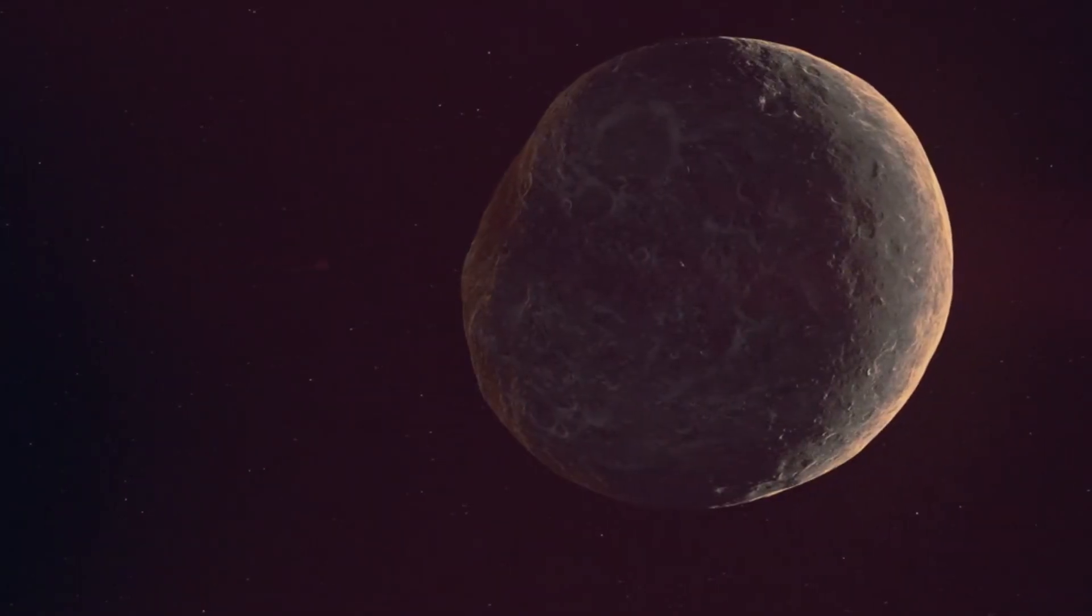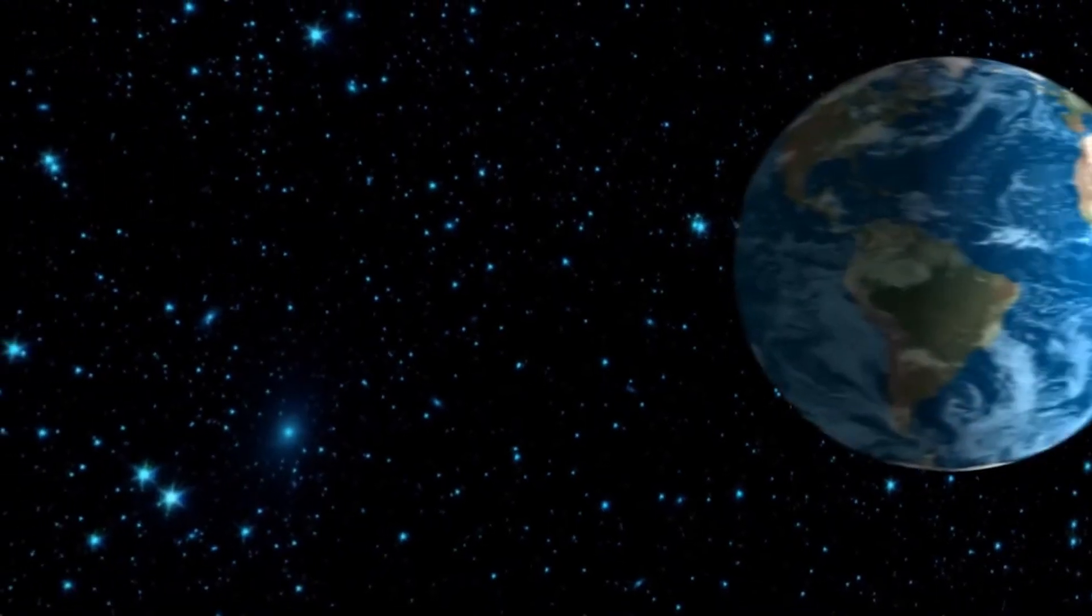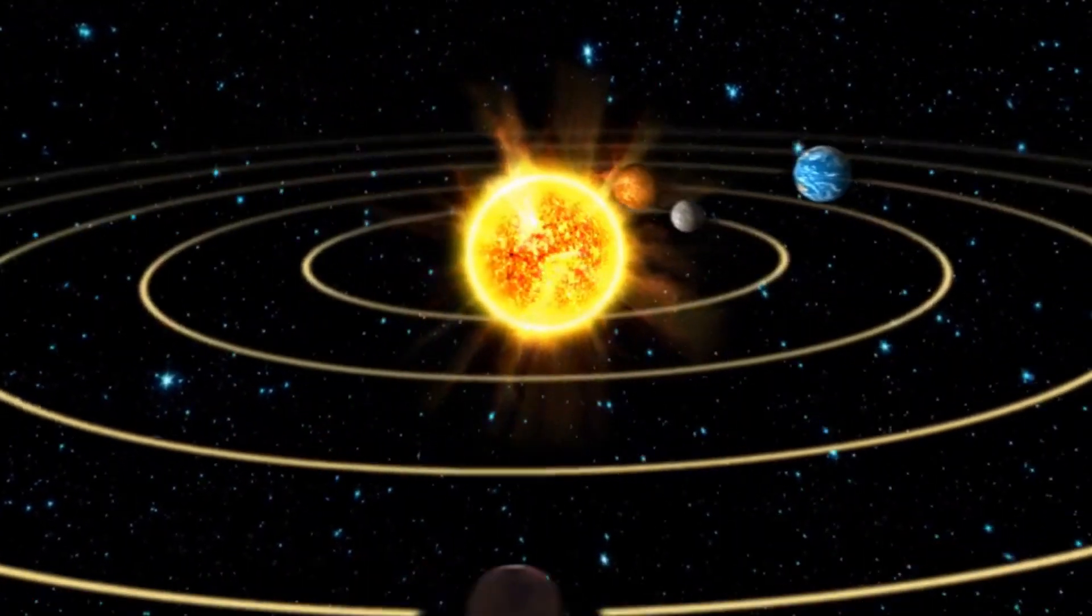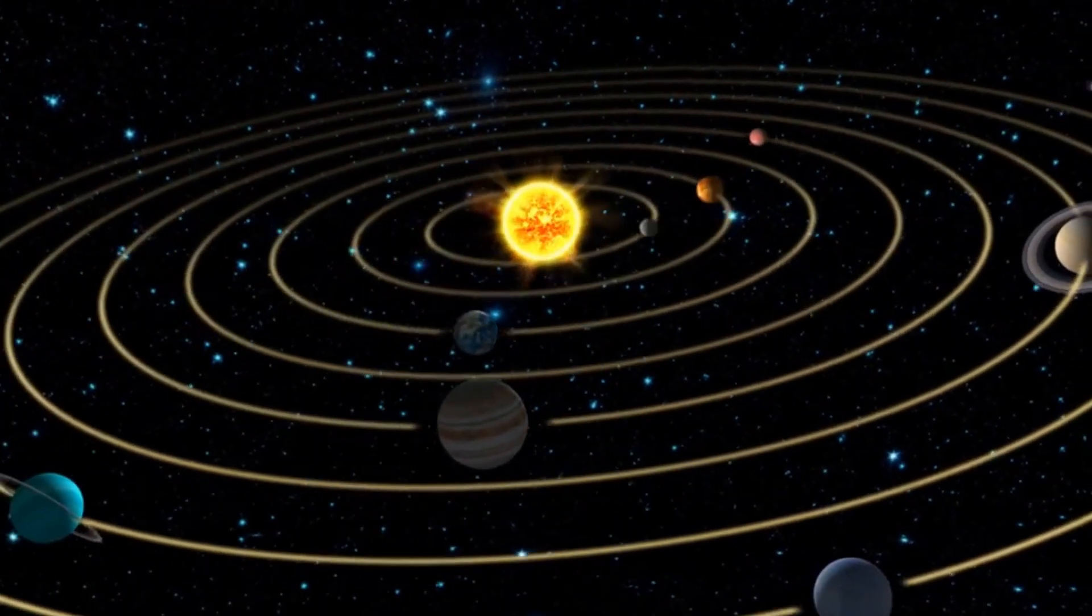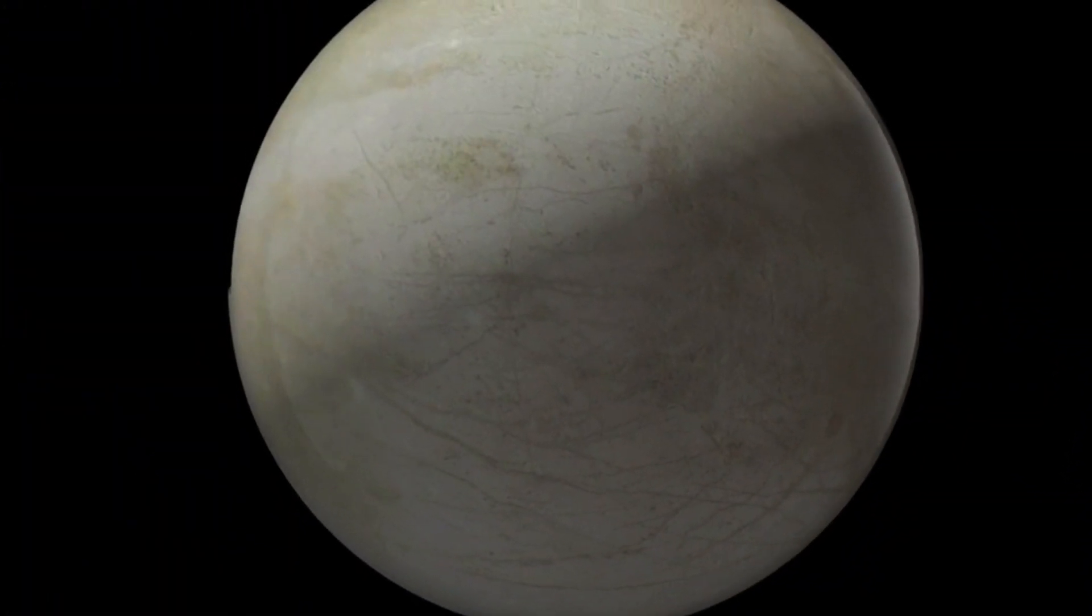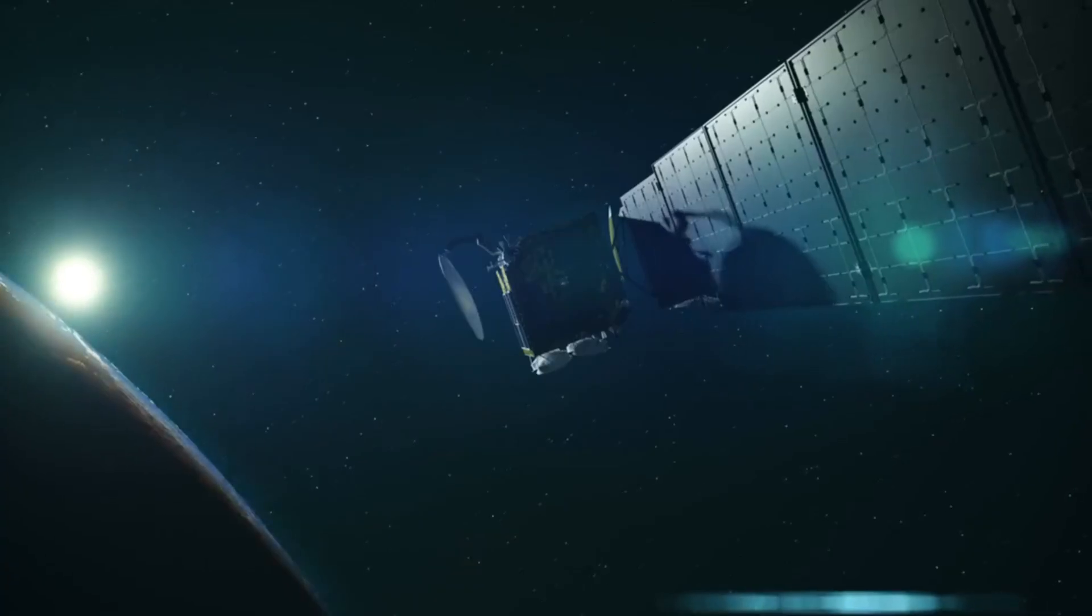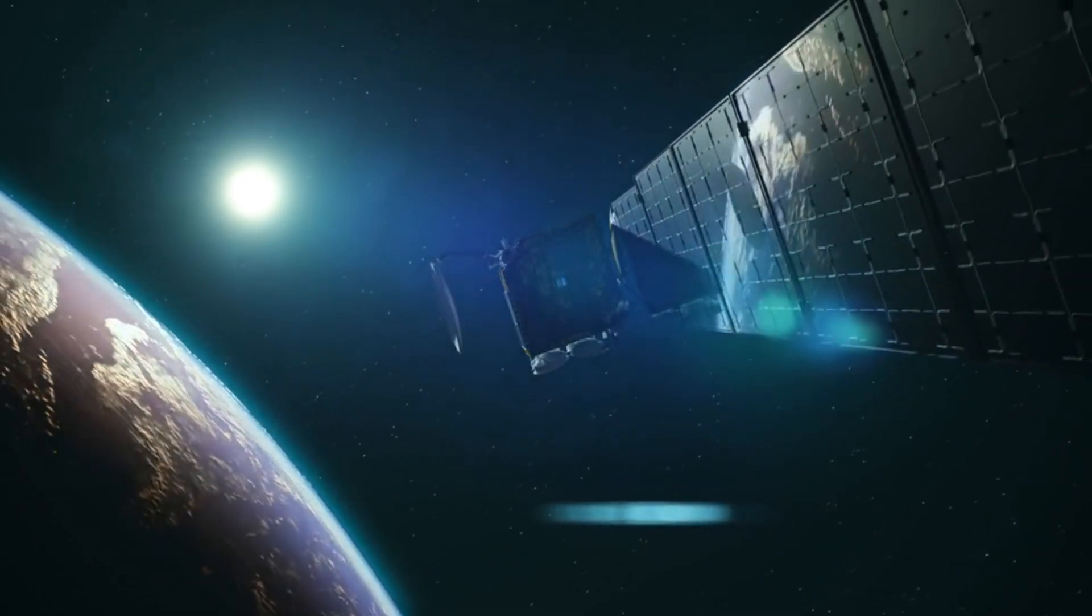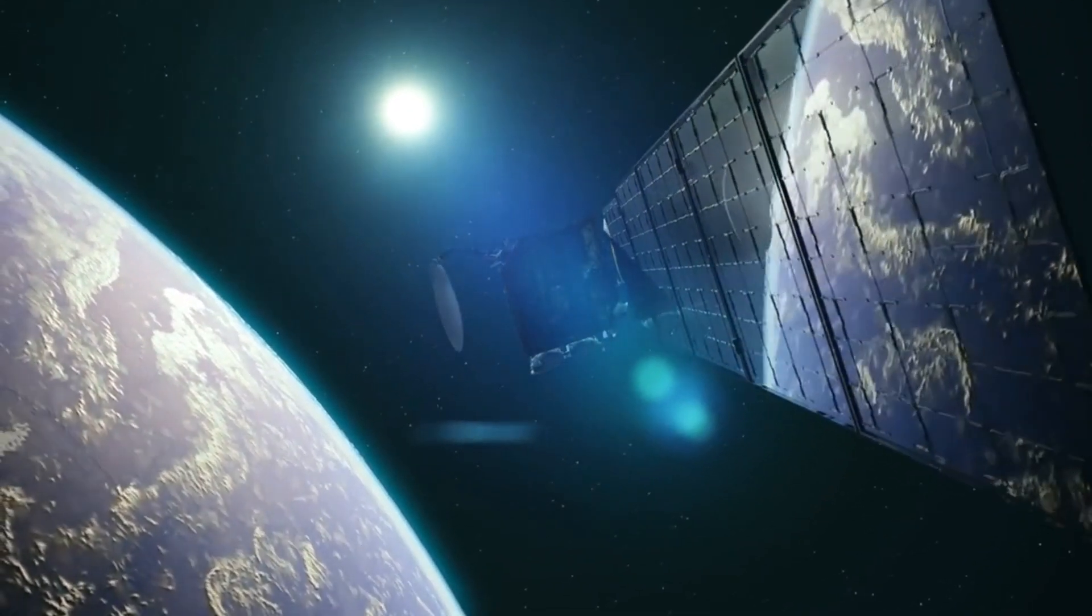Another intriguing possibility is the presence of exomoons around these planets. While Webb is currently focused on observing the planets themselves, future missions could detect moons orbiting Kepler-442b or TOI-700E. These exomoons could also harbor conditions conducive to life, much like Europa or Enceladus in our solar system. In fact, some scientists argue that moons might be even more likely to host life than planets, thanks to tidal heating and the potential for subsurface oceans.